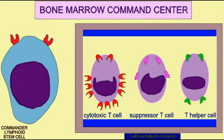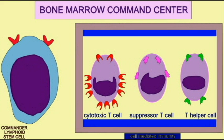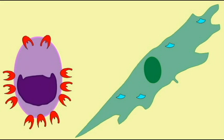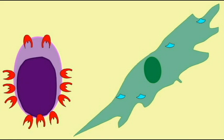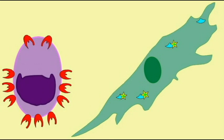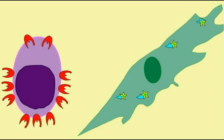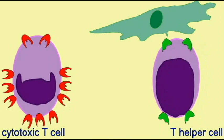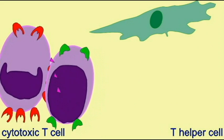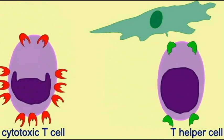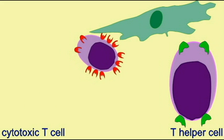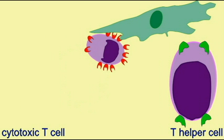Cytotoxic T cell, I notice you should be attacking that abnormal cell. What are you sitting around doing nothing for? What are you waiting for? Well, I can't kill this cell unless I have permission. They don't let me just run around the body killing cells. So until I'm given permission, I'm going to sit here and not do anything. Killer T cell, I give you permission to kill that abnormal cell. Now that I have permission, I get to do my job. I can kill this abnormal cell.